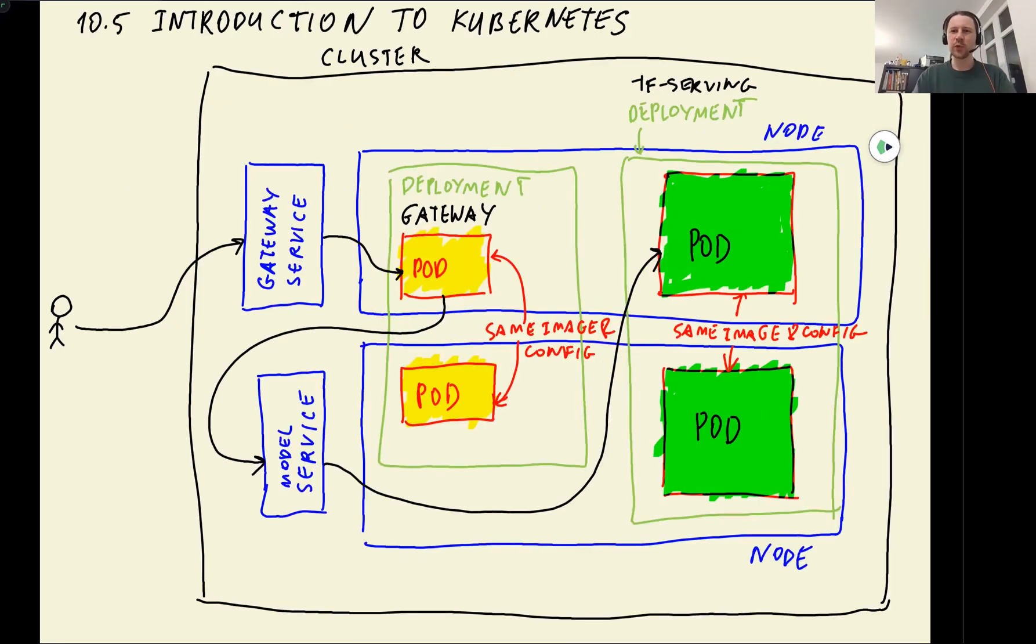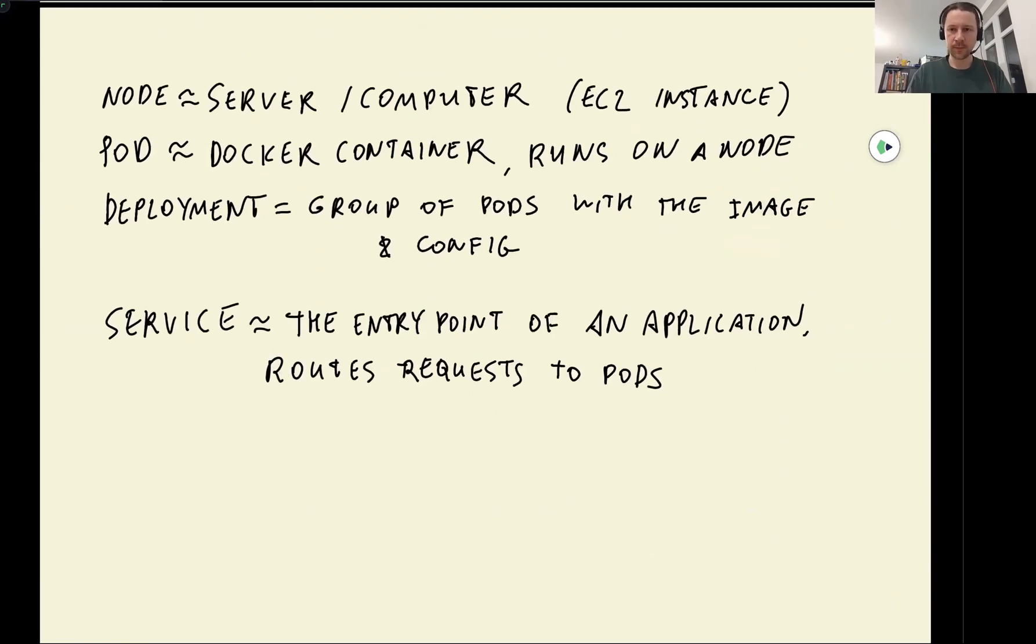We actually have two types of services. There are actually more, but in this case we can simplify it a little bit. This service that the user contacts. This is an external service. This service has to be visible outside of the Kubernetes cluster. But the model service does not need to be visible outside of the Kubernetes cluster. So this service is internal. It can only be used by pods in the Kubernetes cluster. So it cannot be used by clients outside of the cluster.